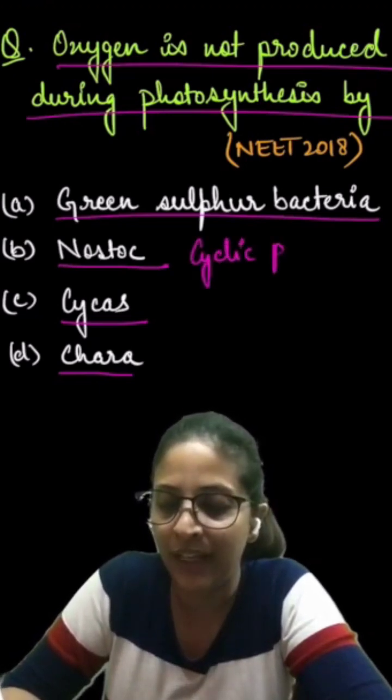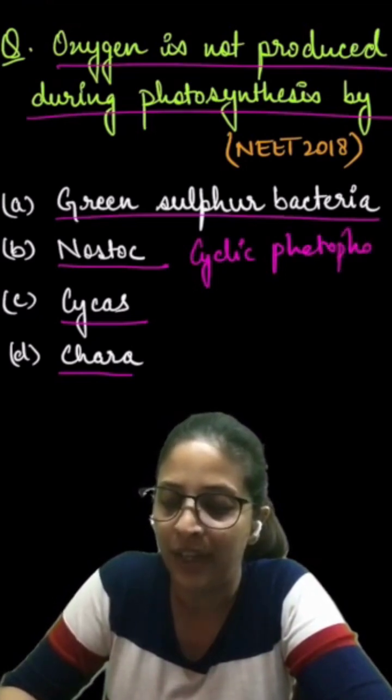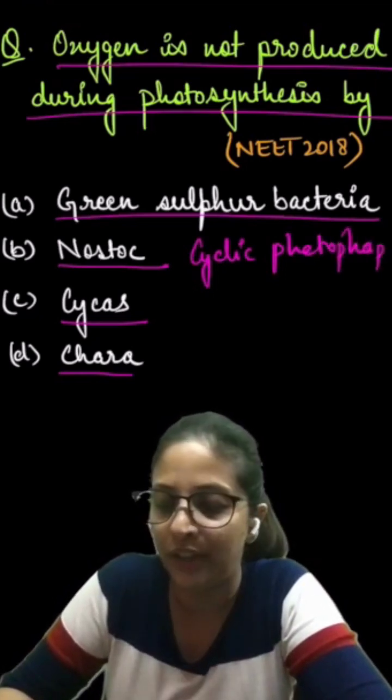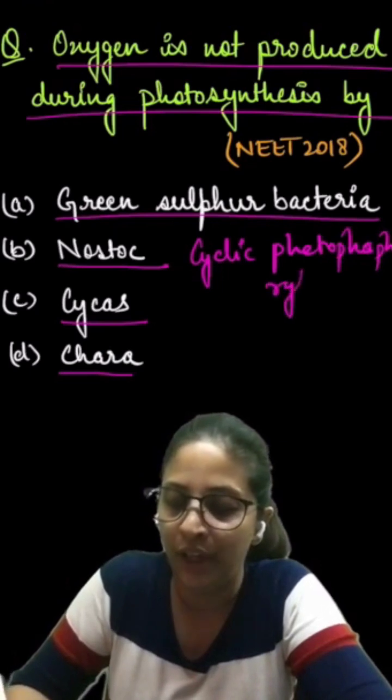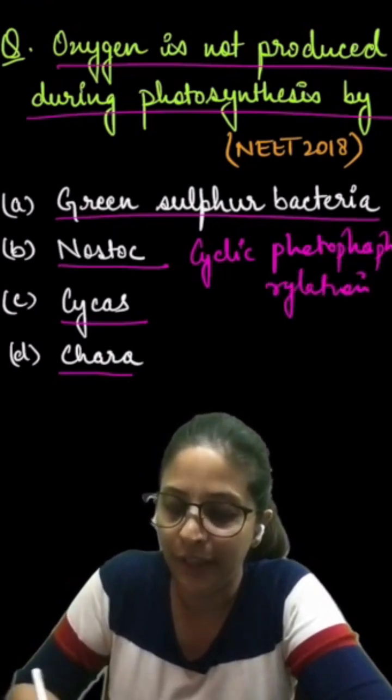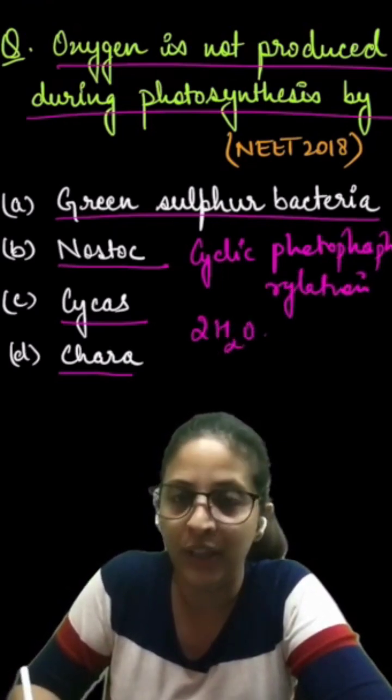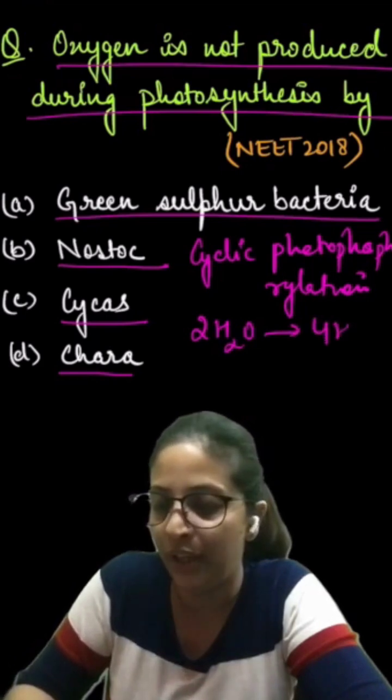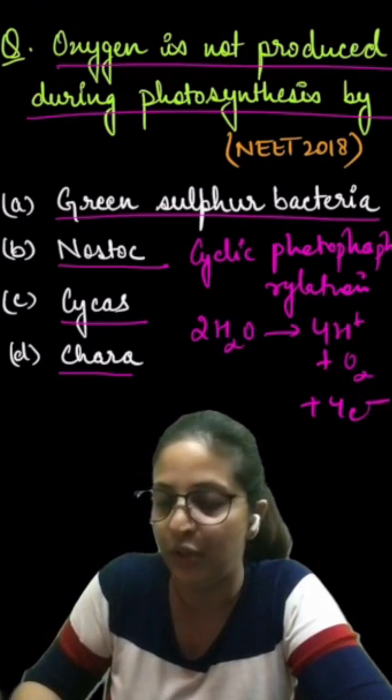Now when cyclic photophosphorylation happens, splitting of water will not happen. And in splitting of water what happens? Water is basically broken down into H plus and oxygen is released and electrons are released.